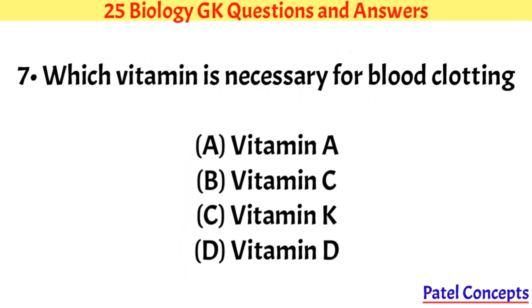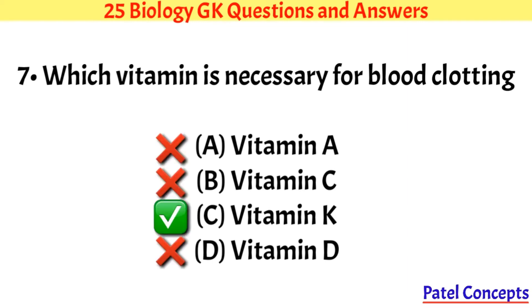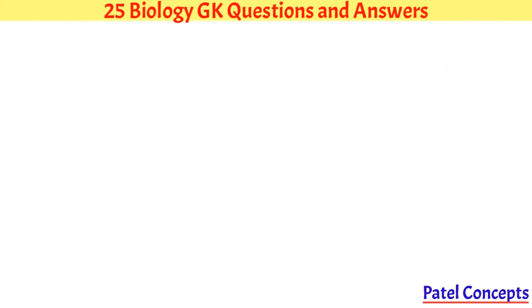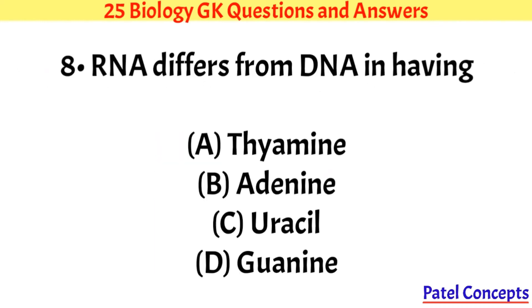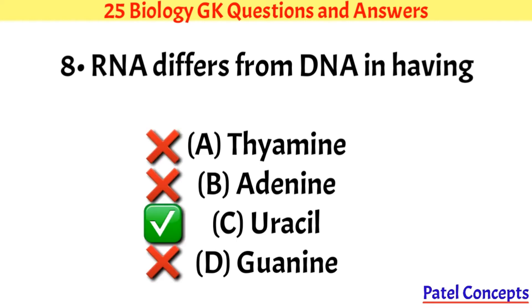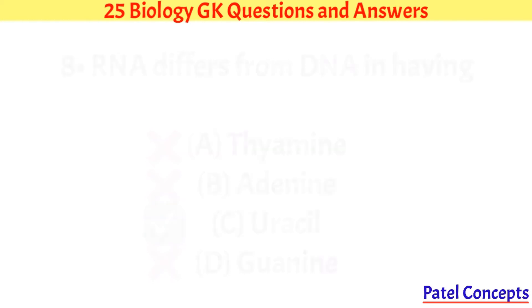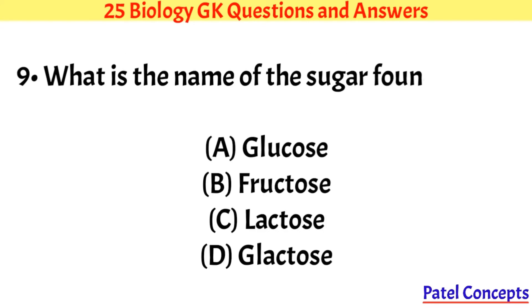Which vitamin is necessary for blood clotting? Vitamin K. RNA differs from DNA in having uracil.